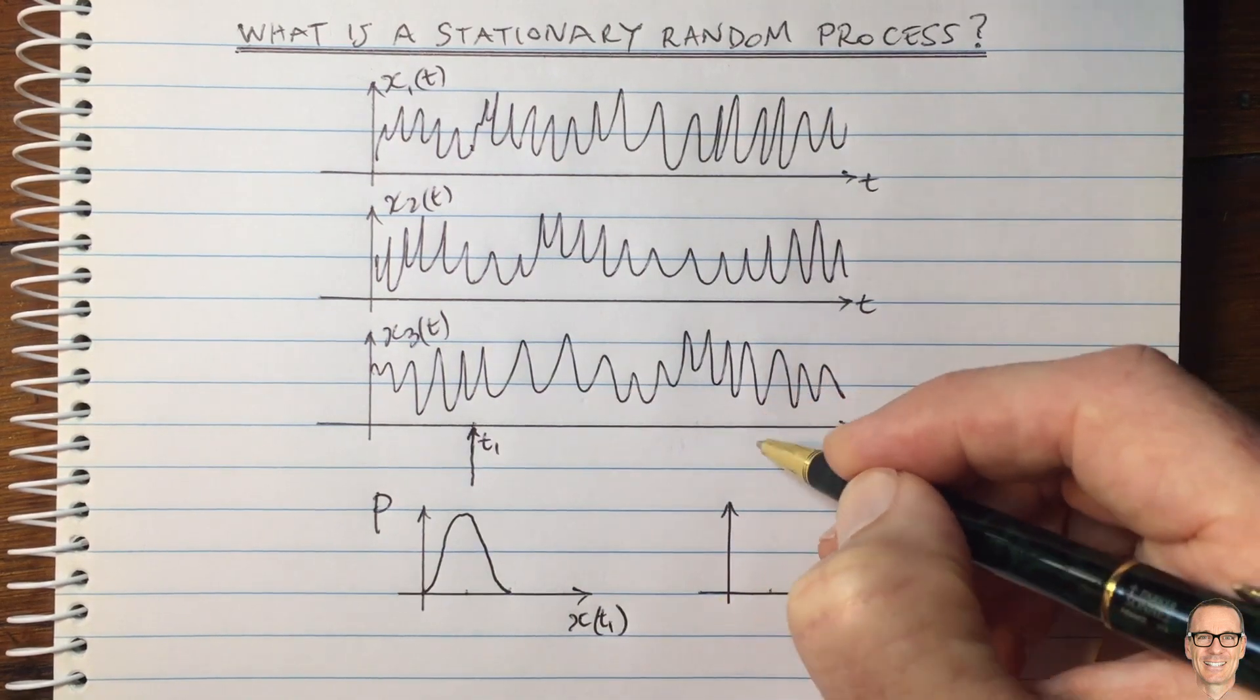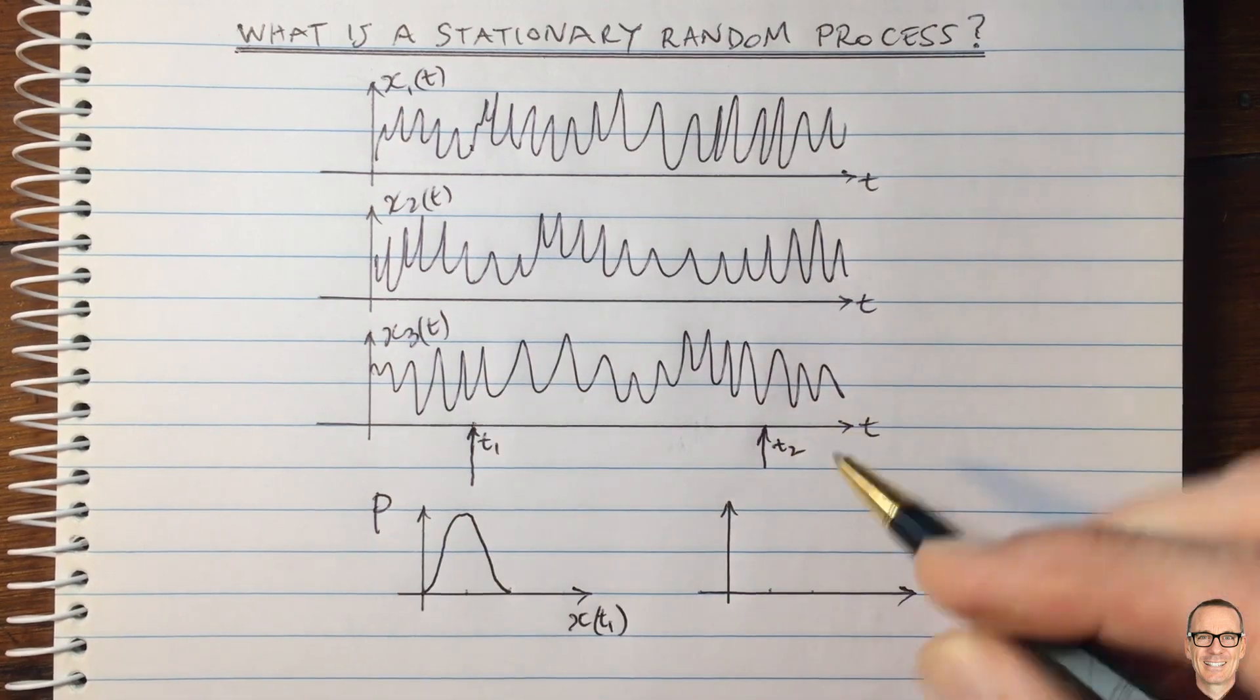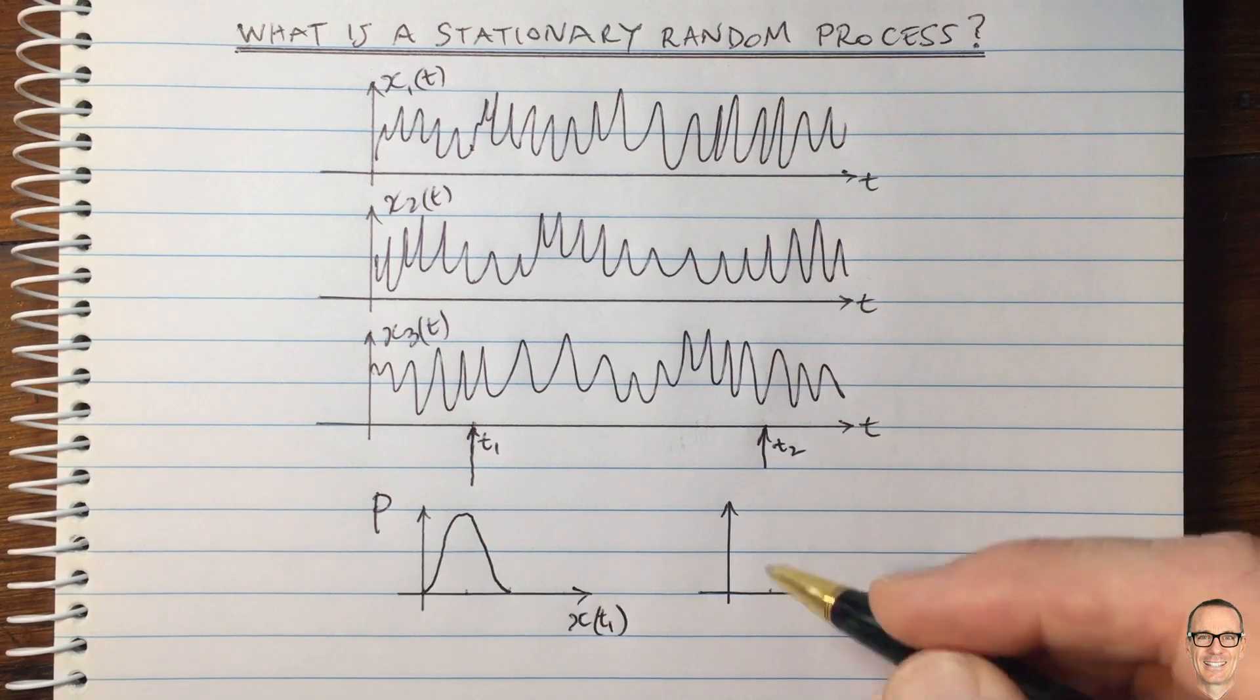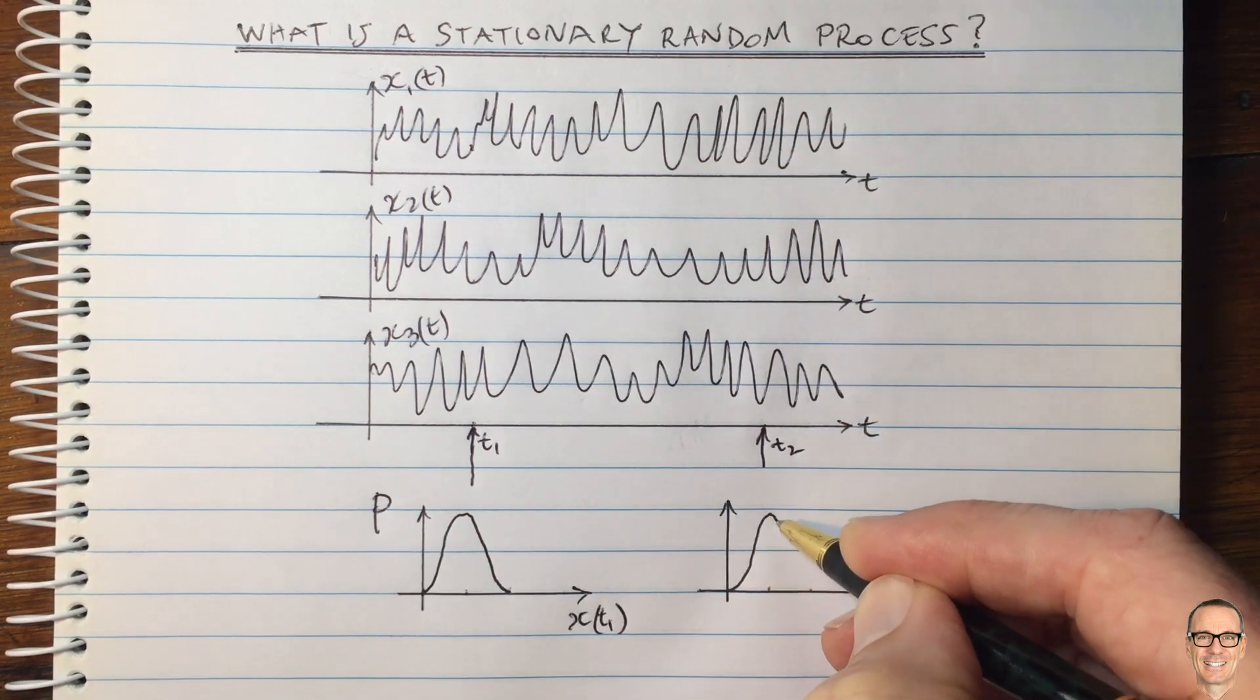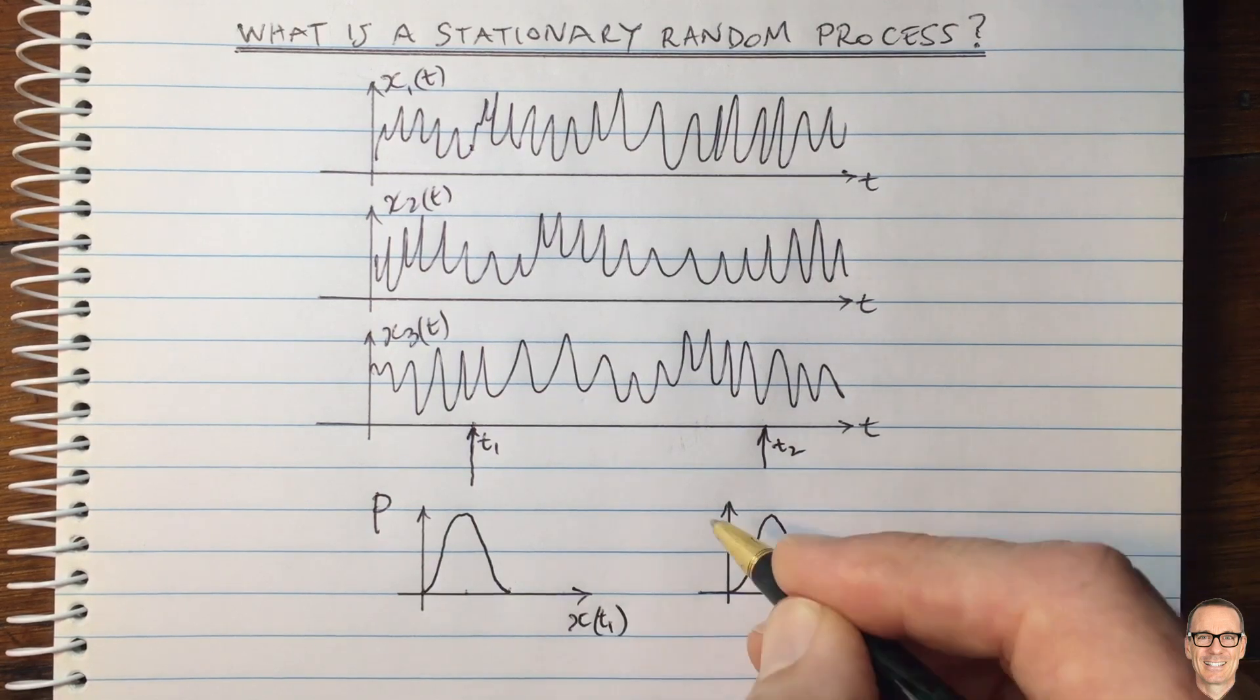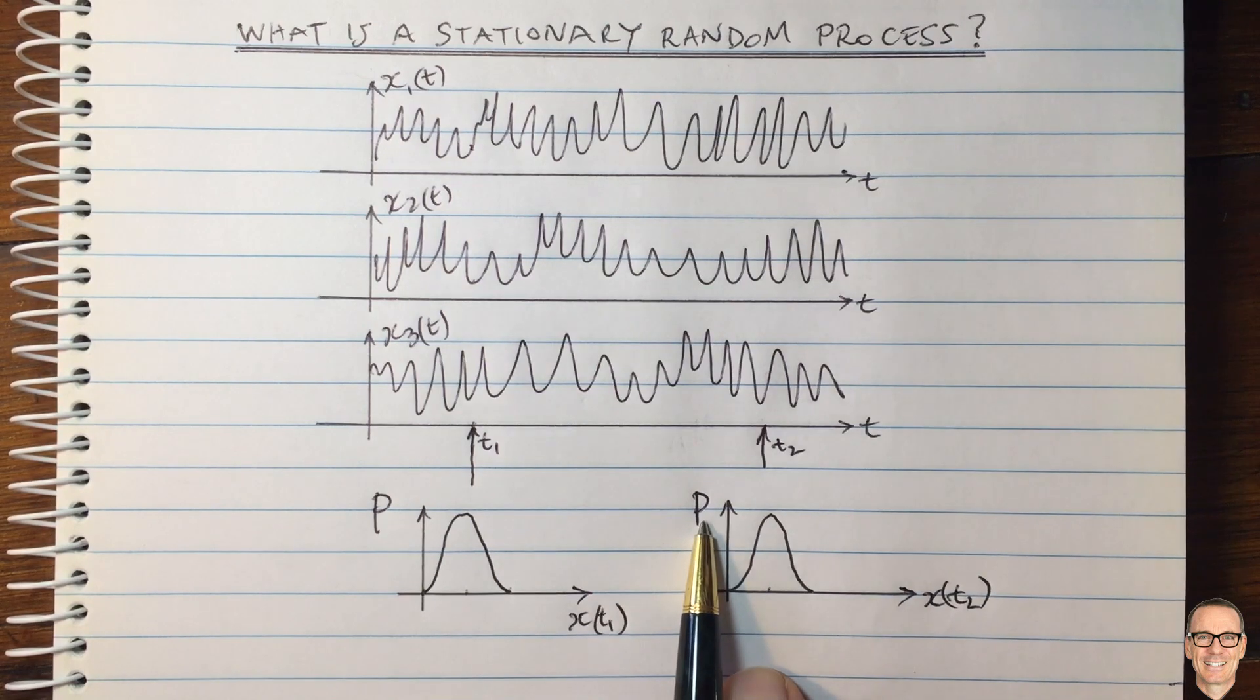Okay, now let's look at another time. Any other time we can pick. Here's a different time. We'll call this t2. And if we look at the density function at time t2, then the density function might look like this, for example. And this would have x of t2 on the horizontal. And this is the probability density function for x at time 2.